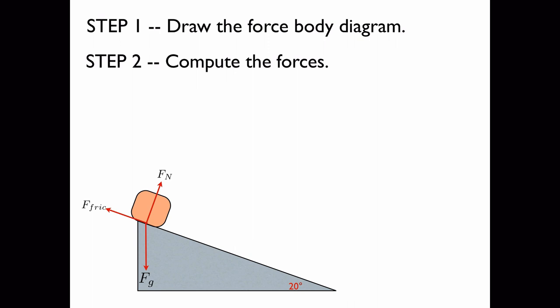Step 2 is to compute the magnitude of the forces. The gravitational force is given by the following equation. We plug in the mass and we get 49 newtons. That one is easy.